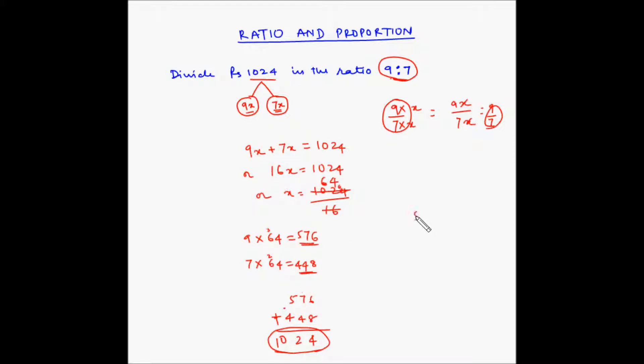9 times x portion is 576 and 7 times x portion is 448. Basically, this is also like 576 divided by 448 which is nothing but 9 multiplied by 64 divided by 7 multiplied by 64. 64 and 64 get canceled, so this is 9 by 7 is the ratio.